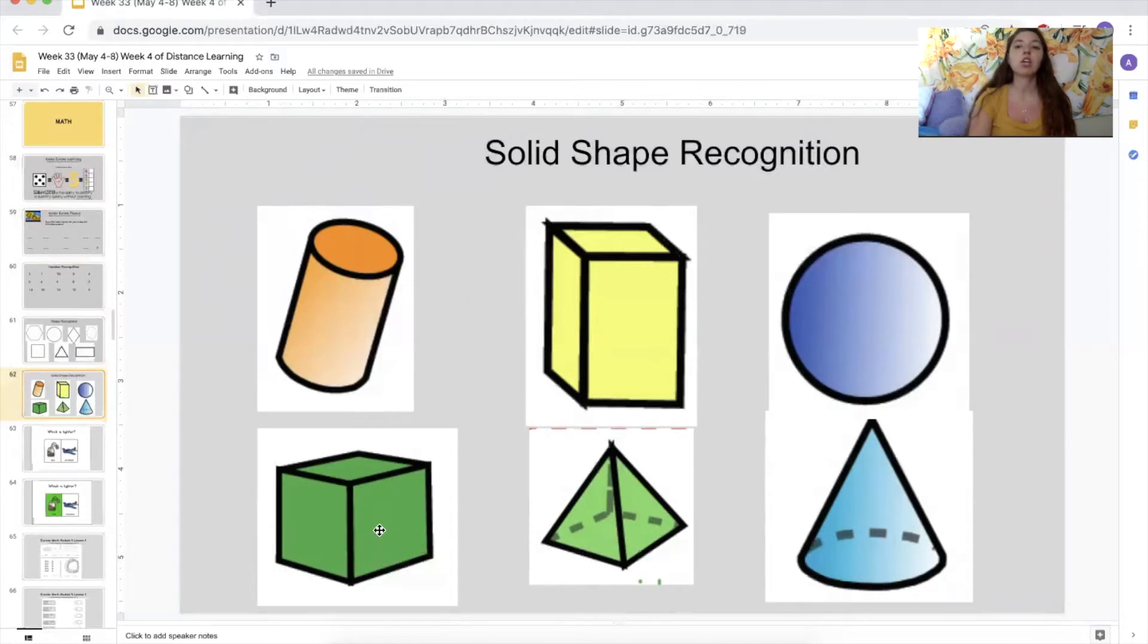How about this one? Cube. How about this one? Cylinder. Very good. It looks like a water bottle or a can of soda. It is a cylinder. Very good. How about this one? Prism. Very, very good. This one? Pyramid and cone. Cone. Just like in ice cream. Cone. Very, very good.